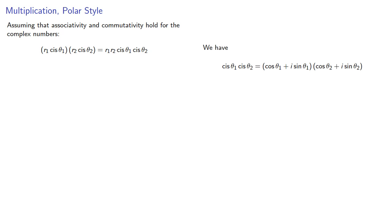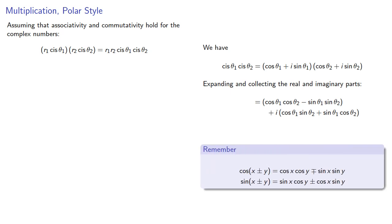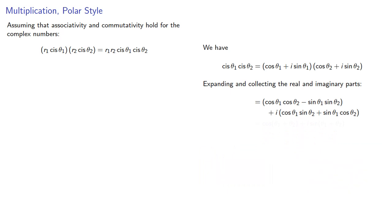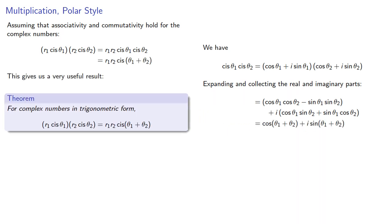Expanding and collecting the real and imaginary parts. Now to go any further, we need to refer back to the sine or cosine of a sum, and that means we can simplify both of these expressions. This gives us the following result: For complex numbers in trigonometric form, the product gives us a complex number whose modulus is the product of the moduli and whose argument is the sum of the arguments.